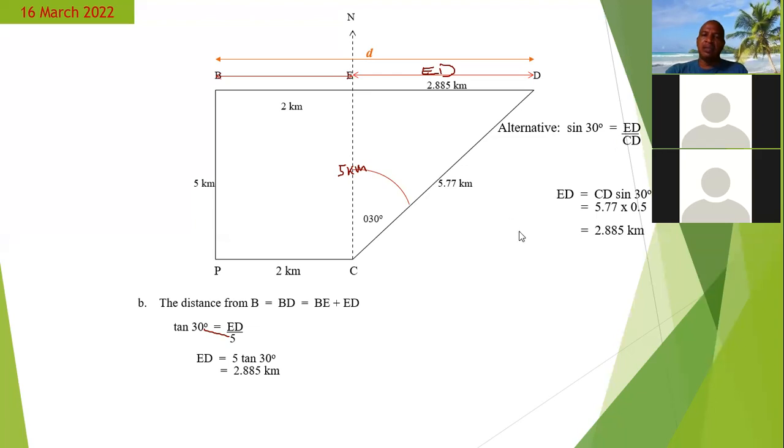With that now we can calculate the distance BD. So the distance BD is equal to BE plus ED. It's two kilometers that we already know from here, plus this 2.885 kilometers. When we add them, we get 4.885 kilometers. So that would be the answer for that distance. That would have completed the question. Any questions, guys?